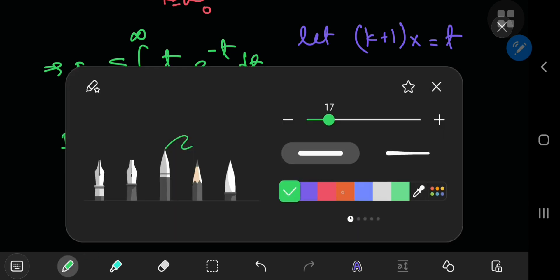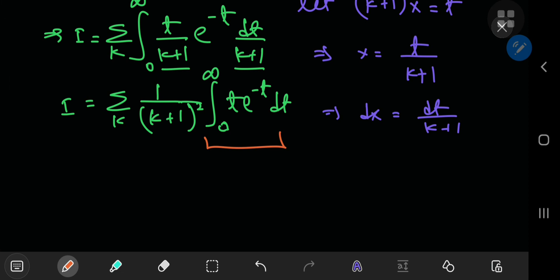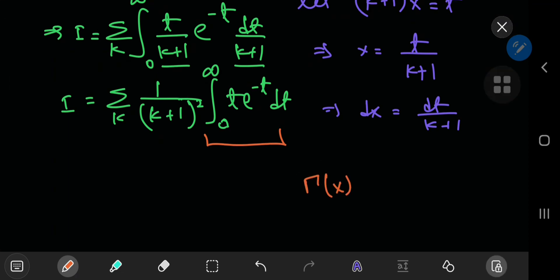And what you have is actually quite familiar. This here is the gamma function. Now gamma x equals the integral from 0 to infinity of t to the x minus 1 times e to the negative t. Now what you have here is t to the 1, which implies that you have t to the 2 minus 1 here. So what you have is basically gamma 2.